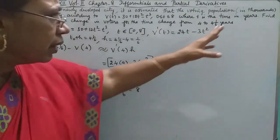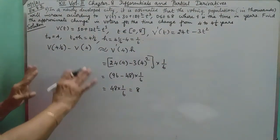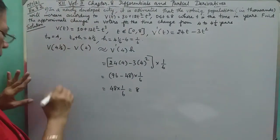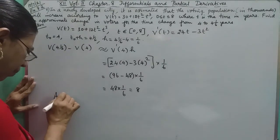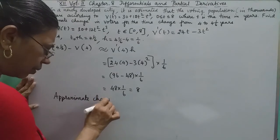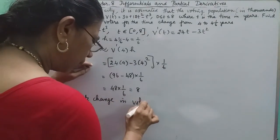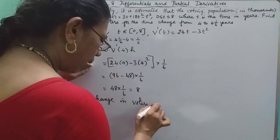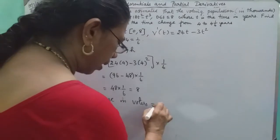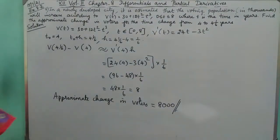The voting population is in thousands according to this. So the approximate change in voters is 8 thousands, or 8,000. Ok, bye.